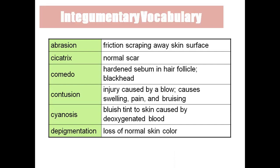Contusion is a skin injury causing redness, swelling, pain, and bruising under the skin. Cyanosis — cyano means blue — is abnormal blue discoloration of the body due to more deoxygenated blood. Depigmentation is the loss of normal skin color; albinism is an example of depigmentation. Cyanosis can be seen clinically as bluish pigmentation, for example on a baby's face, due to more deoxygenated blood.